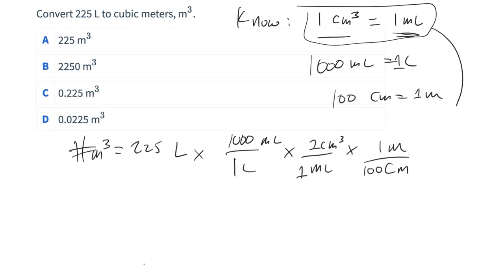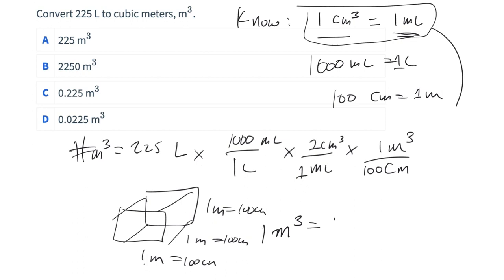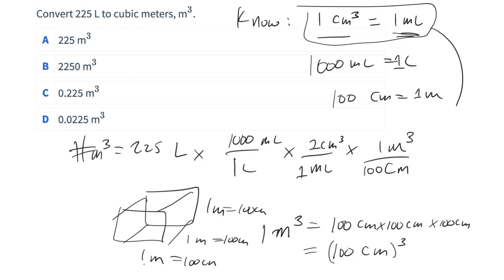Why do we cube the conversion factor? Think of a cube that's 1 meter by 1 meter by 1 meter. So 1 cubic meter equals 100 centimeters times 100 centimeters times 100 centimeters, which equals 100 centimeters cubed, which equals 100 cubed centimeters cubed. So when I look at my conversion factor, I need to cube the entire thing: 1 cubic meter is 100³ cm³. We cube the 100 and we cube the centimeters.